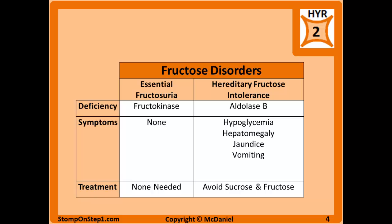Hereditary fructose intolerance is a deficiency of the second enzyme, aldolase B, and that can create some pretty severe problems. You can see hepatomegaly, jaundice, vomiting, and hypoglycemia. The hypoglycemia is because you're no longer able to convert fructose to glucose, but also because fructose 1-phosphate builds up and steals away phosphates from other pathways, preventing you from having enough ATP available to make glucose.